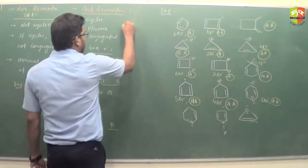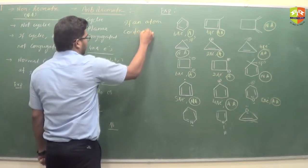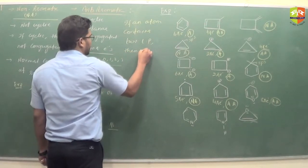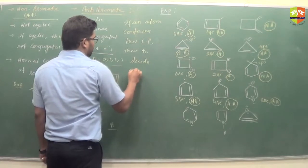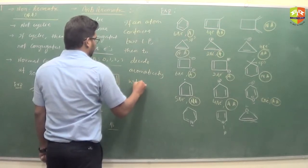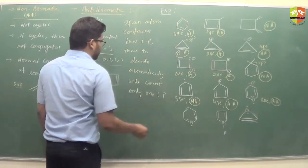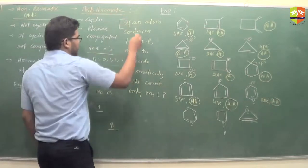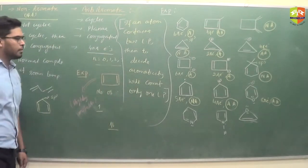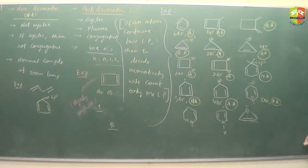Always remember: if an atom contains 2 lone pairs, then to decide aromaticity, we will count only one lone pair. So here the oxygen contains 2 lone pairs — we count only one. So 1, 2, 3, 4, 4, 2, 2 — that gives 8 pi electrons, anti-aromatic.